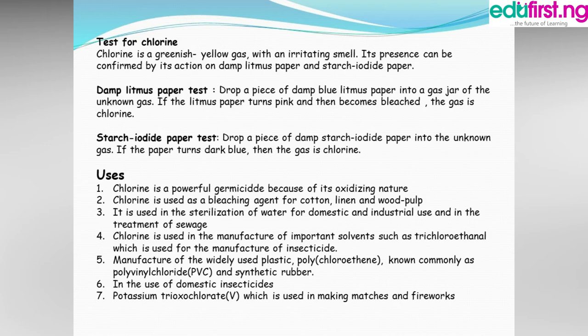Uses of chlorine: Chlorine is a powerful germicide because of its oxidizing nature. It is used as a bleaching agent for cotton lining and wood pulp. It is also used in the sterilization of water for domestic and industrial use, and the treatment of sewage. Chlorine is used in the manufacture of important solvents such as trichloroethane, which is used for the manufacture of insecticides.